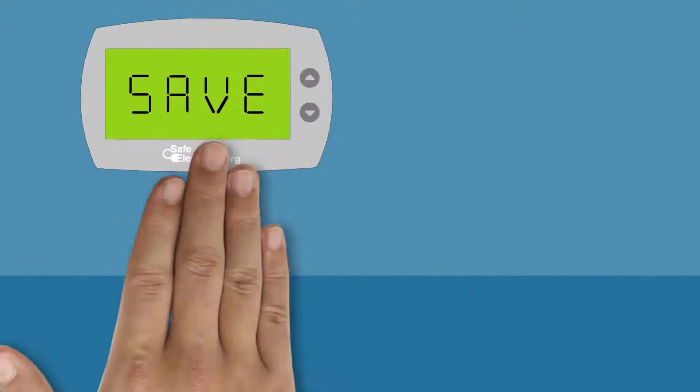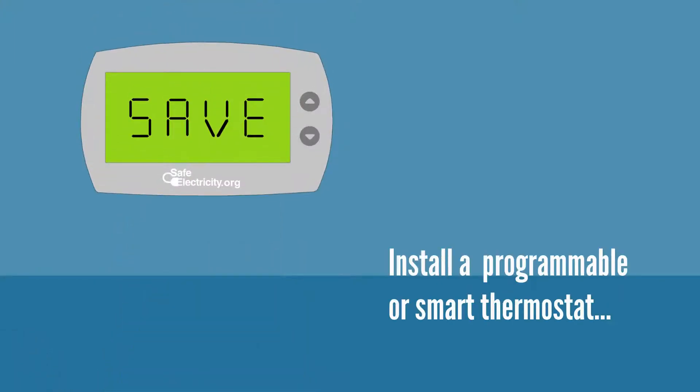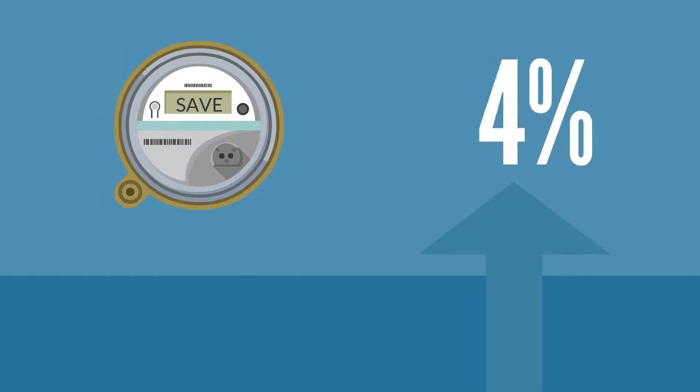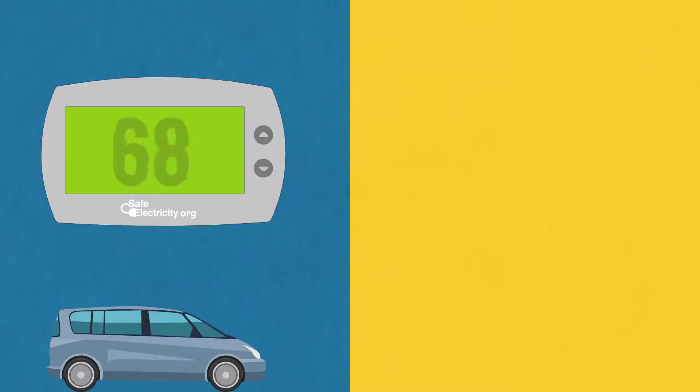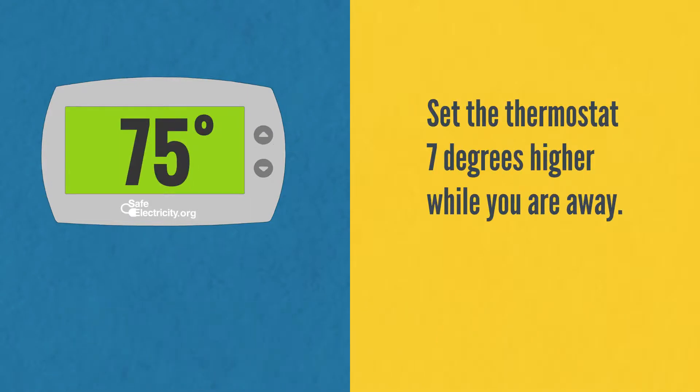Finally, if you don't already have one, install a programmable or smart thermostat. Putting either version to work could save you up to 10% a year on energy costs. To save money this summer, set it for 7 to 10 degrees higher during the day while you are away.